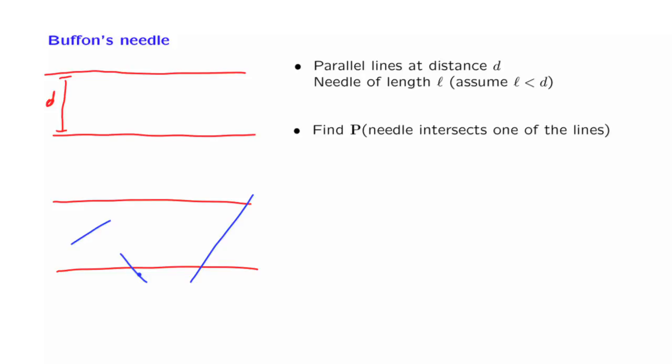So in this setting, we're interested in the question of how likely is it that the needle is going to intersect one of the lines if the needle is thrown completely at random? We will answer this question and proceed as follows. First, we need to model the experiment, the probabilistic experiment, mathematically.